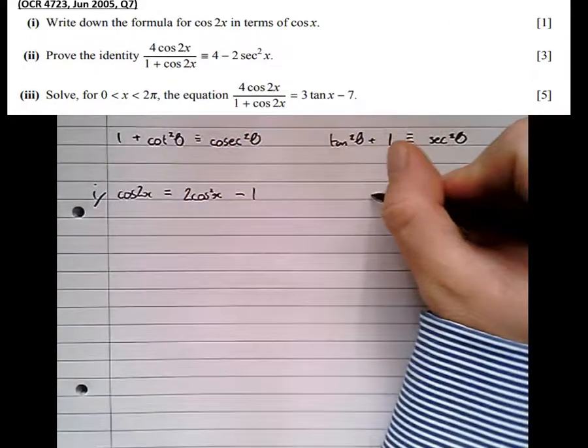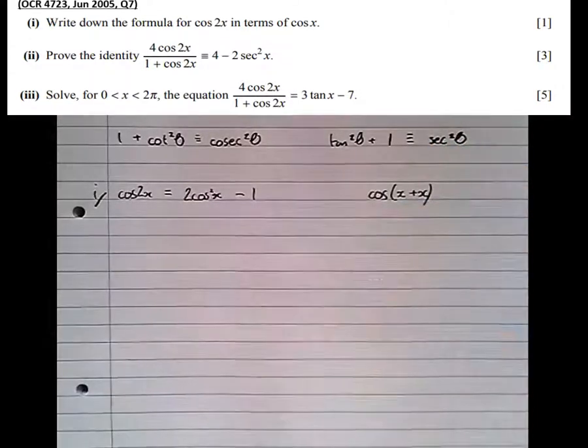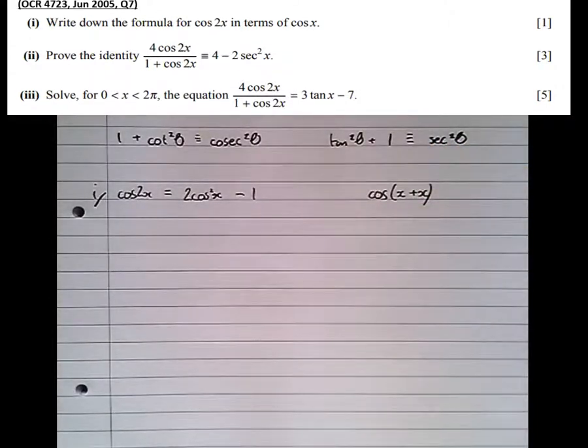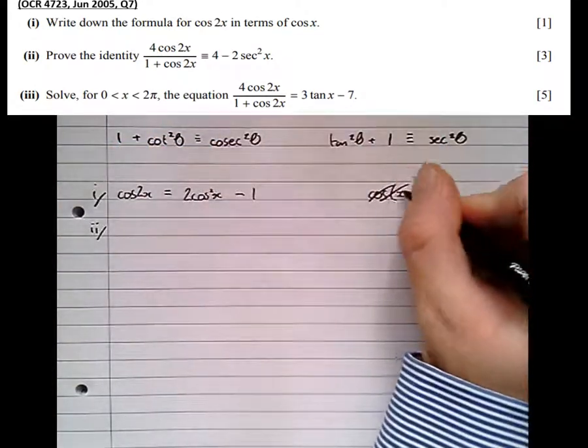We can actually generate this, if you want, by rewriting cos of 2x as cos of x plus x, then expanding using the compound angle formulae, but it's best just to learn it.